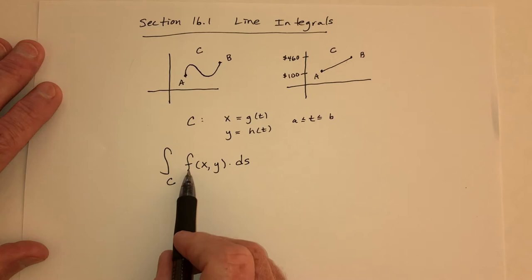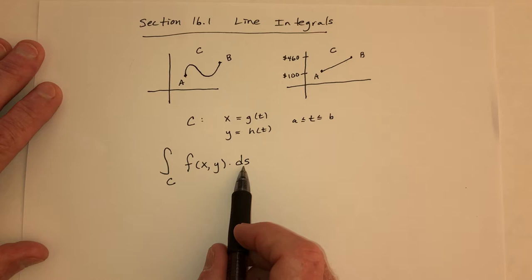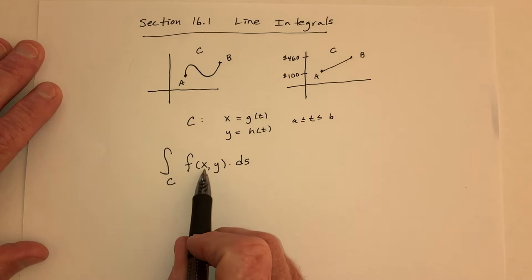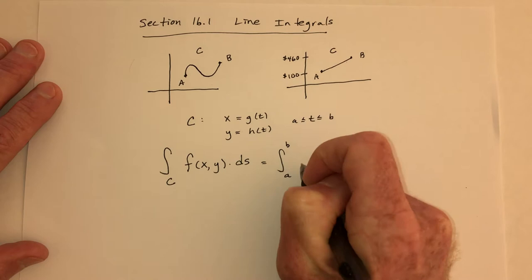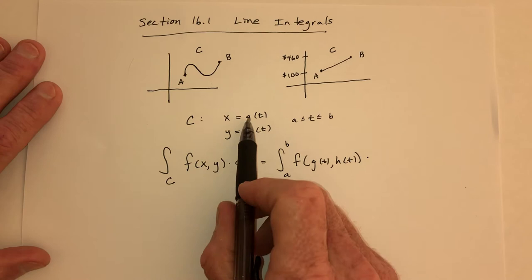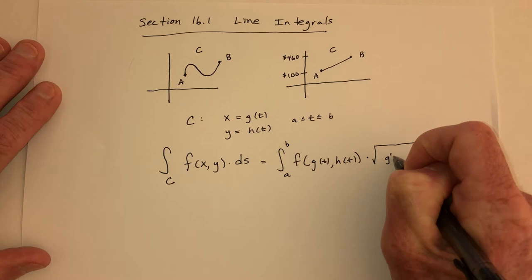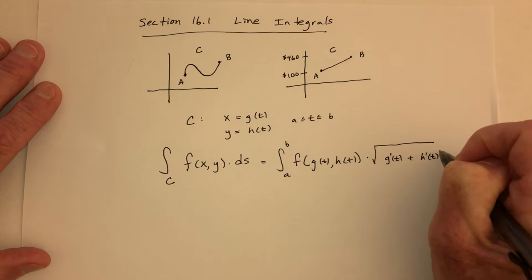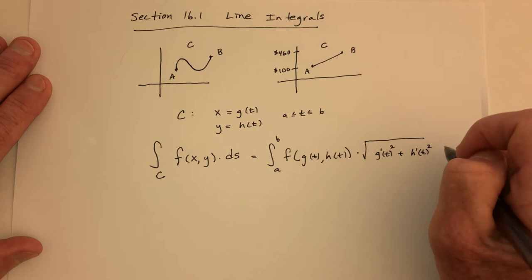We integrate with respect to s, which is arc length. This is basically saying: function times how far did you go. Since we have what x and y equal, we plug them in. The integral becomes the integral from a to b of f(g(t), h(t)). For arc length with a parametric function, you take the derivative of each component, square them, add them together, and take the square root.